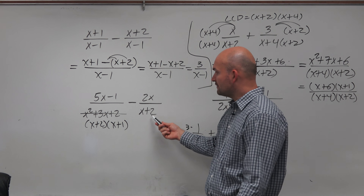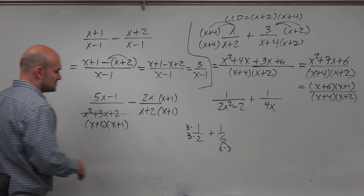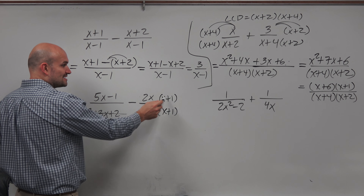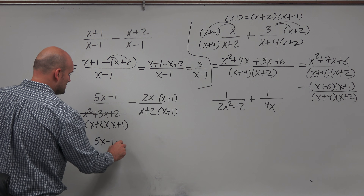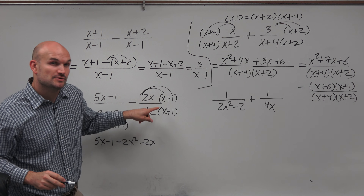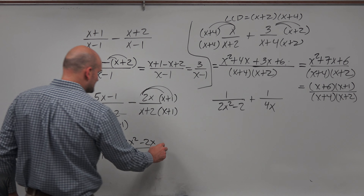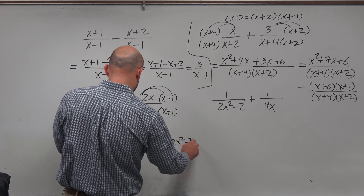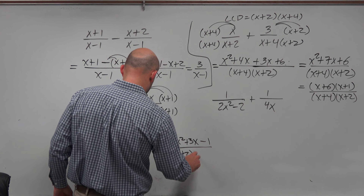Similarly here: we have (x plus 2)(x plus 1) and just (x plus 2), so they already share x plus 2. We only need to multiply the second fraction's top and bottom by (x plus 1). After finding the common denominator, distribute the negative 2x to both terms in (x plus 1), giving 5x minus 1 minus 2x squared minus 2x, all over (x plus 2)(x plus 1).